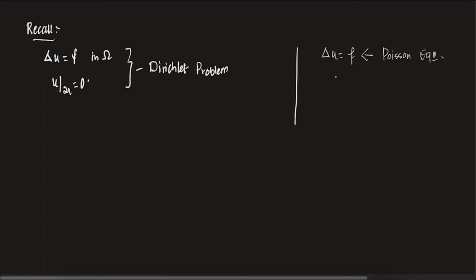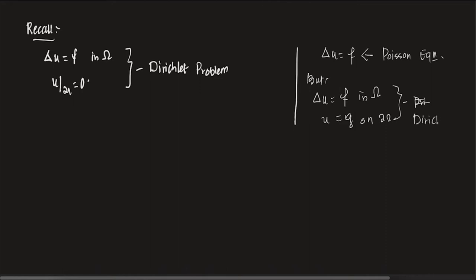If you take this equation — Laplacian of U equals to F in omega — and put the boundary condition U equals to G on del omega, this problem is called a Dirichlet problem, where data is given only on U. It is named after the mathematician Dirichlet.